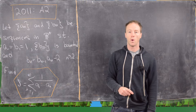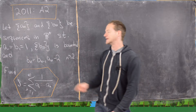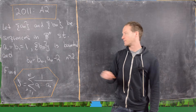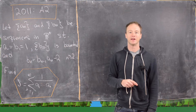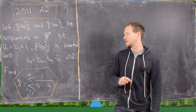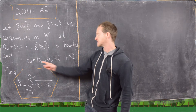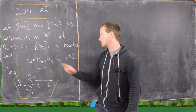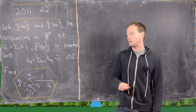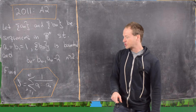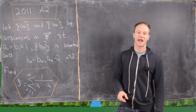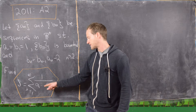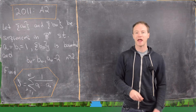A1 and B1 are both one. BN is a bounded sequence, and since we're talking about sequences of positive real numbers, we can read that as bounded above, because it's automatically bounded below by zero. We also have a recursion: BN equals BN minus one times AN minus two. Our goal is to show that the sum of the reciprocals of the products A1 through AN converges, and to find its value.